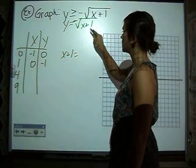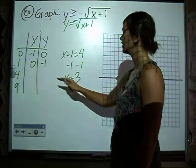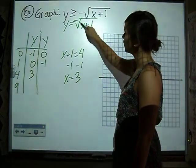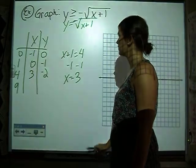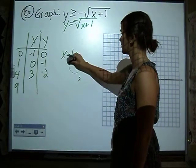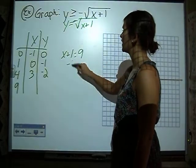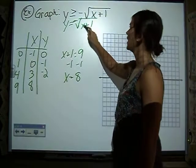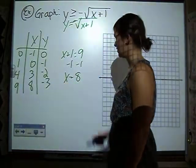So we set what's underneath here equal to 4. Subtract 1, x equals 3. When we put 3 in, 3 plus 1 is 4, square root of 4 is 2 times the negative, negative 2. And then we set it equal to 9, x equals 8. So 8 plus 1 is 9, square root of 9 is 3 times the negative is negative 3.